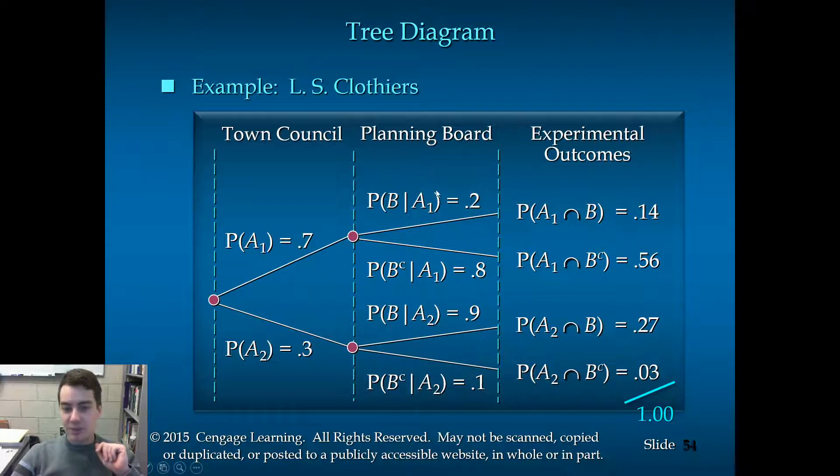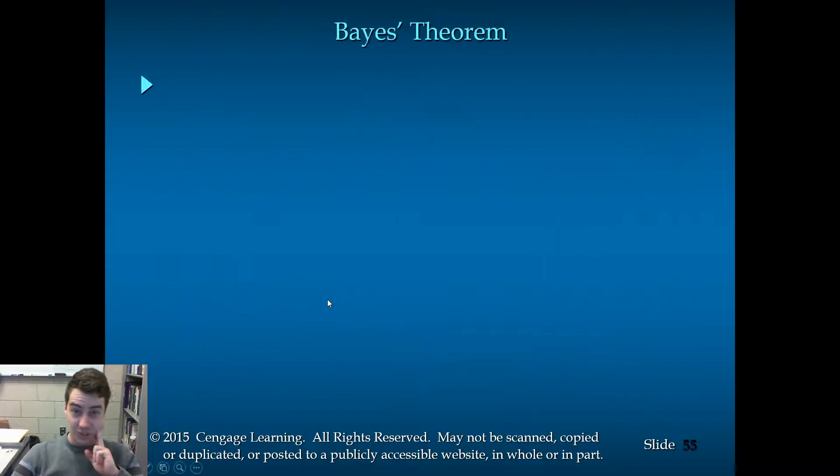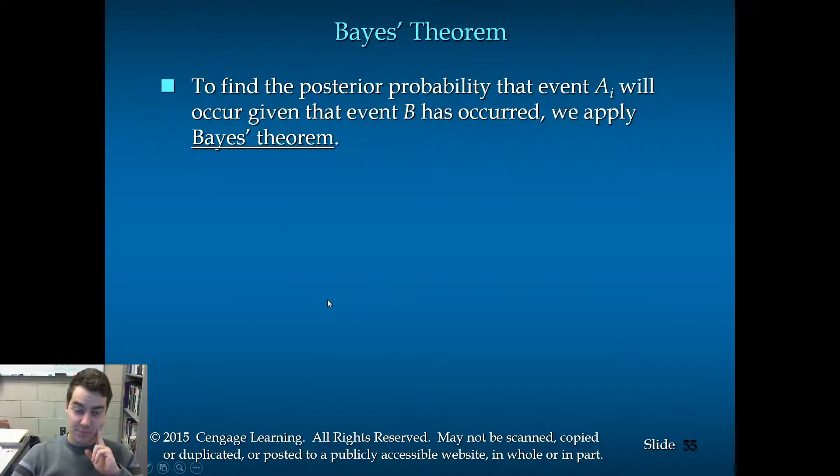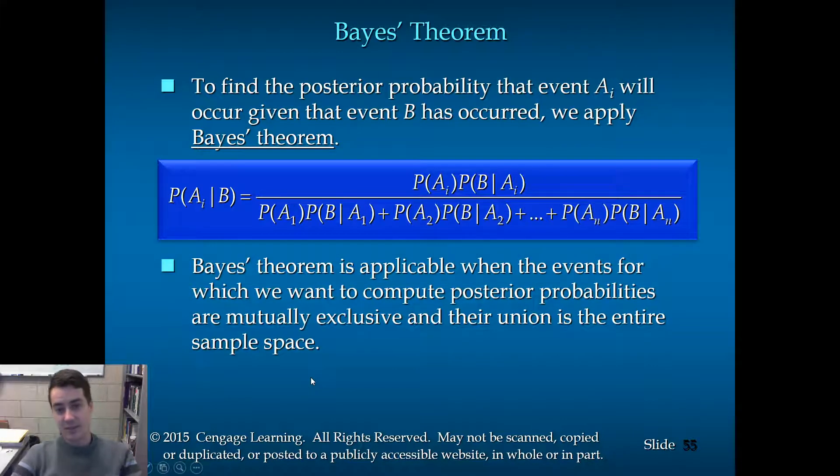So we now have all the values we need. We have all the information we need to fill out Bayes' theorem, which I haven't shown you yet. So perhaps this is the time. So to find the posterior probability that event AI will occur, given that event B has occurred, we apply Bayes' theorem, which looks a little sort of something like this. Now, don't be alarmed. I know it's intimidating.